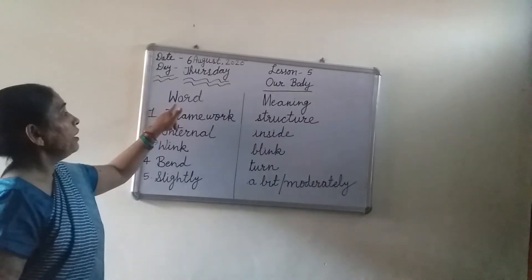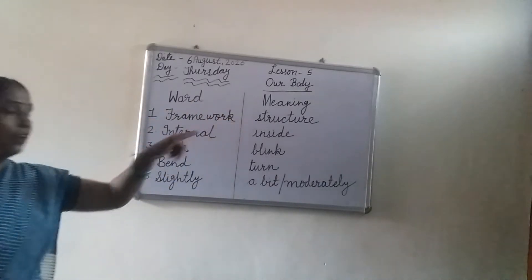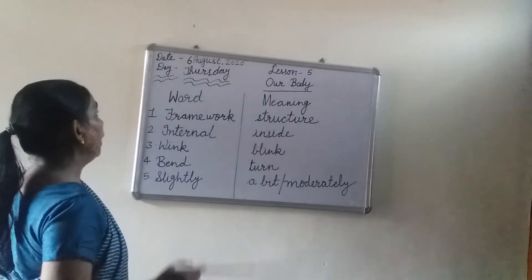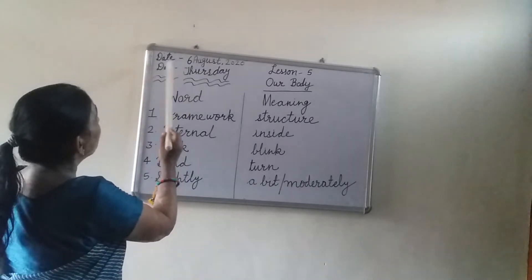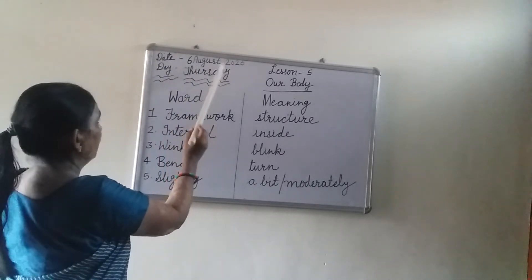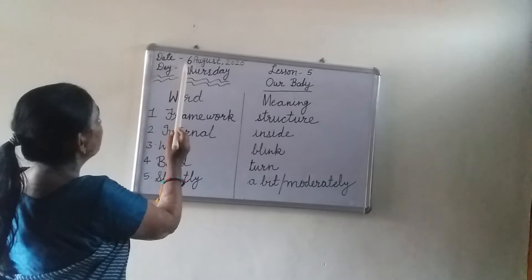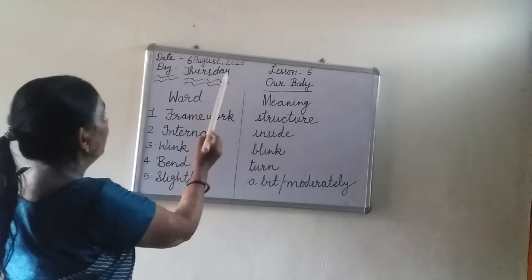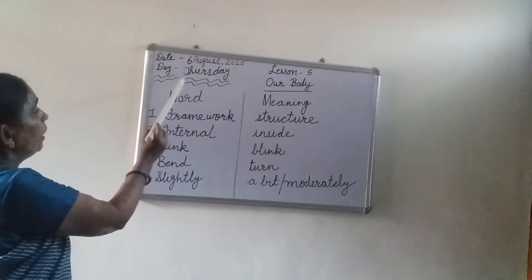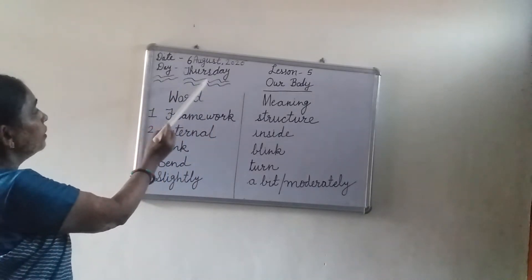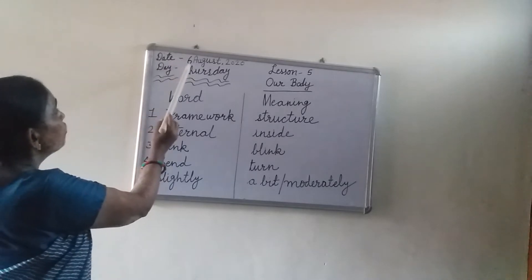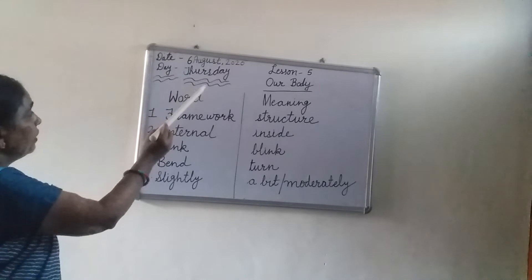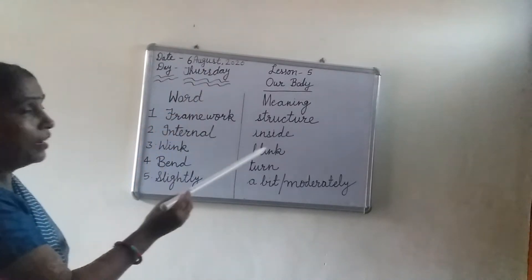हम आज Lesson 5 के word meaning कर रहे हैं. Work start करने से पहले आपको notebook में सबसे ऊपर date mention करना है. Date क्या है आज? 6th August 2020. उसके बाद day mention करेंगे. Day क्या है? Thursday. Today is 6th August 2020, and day is Thursday.